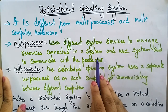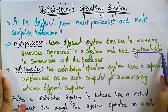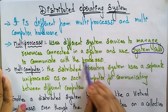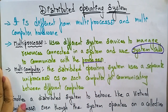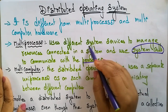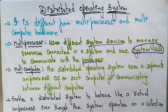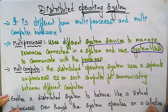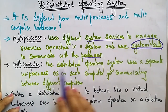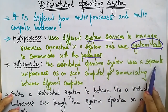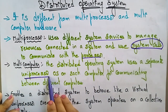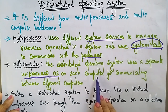The multi-processor uses system calls to communicate with the processor — that is what we call a multi-processor. It manages resources connected in a system using system calls. As for the multi-computer, the distributed operating system uses a separate uni-processor operating system on each computer for communicating between different computers.